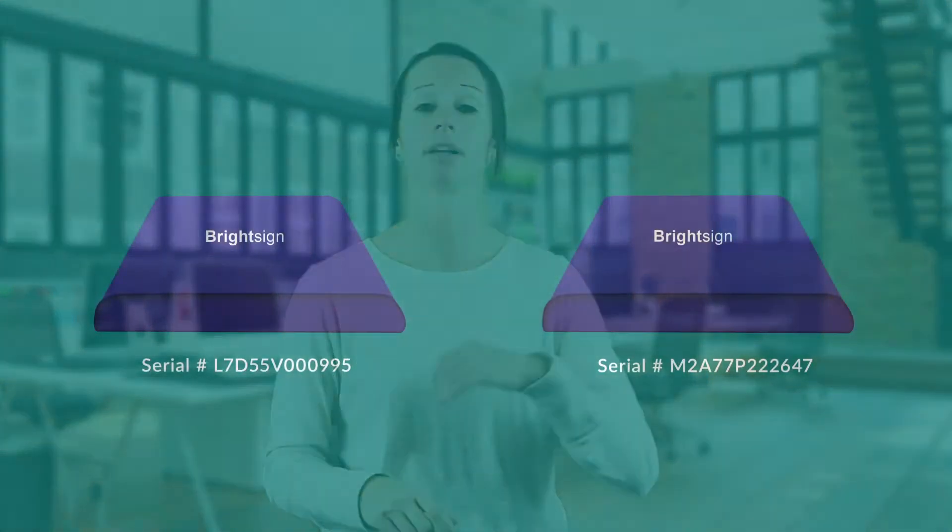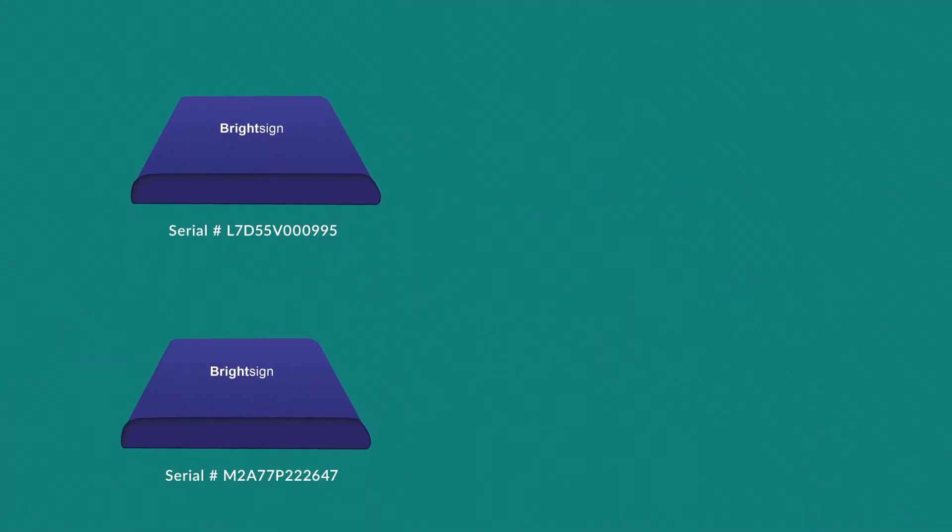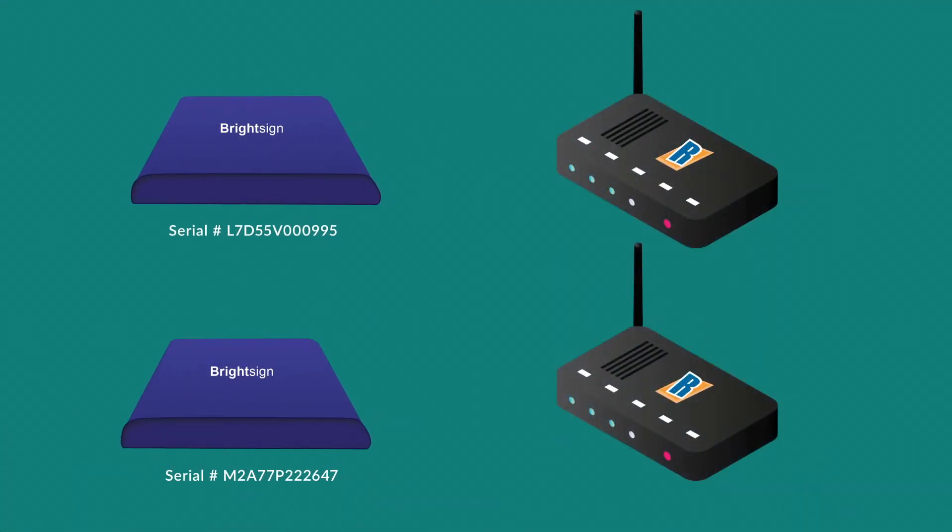Once I get that information, I'm going to go into the Reach system and start creating Reach players. This gives you access and control to your BrightSign player. Only Reach employees can create players, so I'm going to keep that ratio the same — if you're ordering two BrightSign players, I'm going to create two players in the Reach system. If you order 10, I'll create 10, 20, and so on.